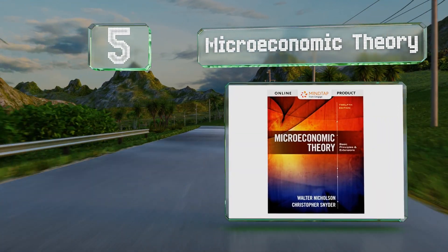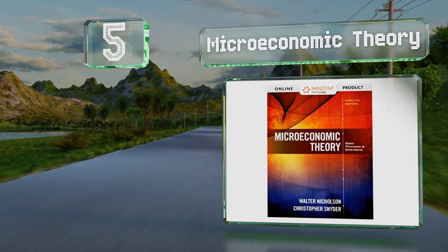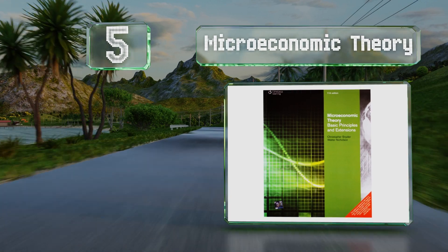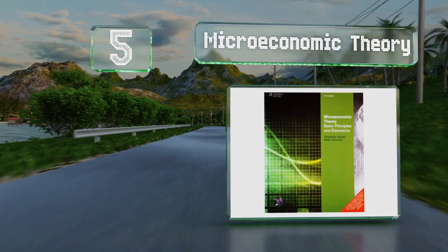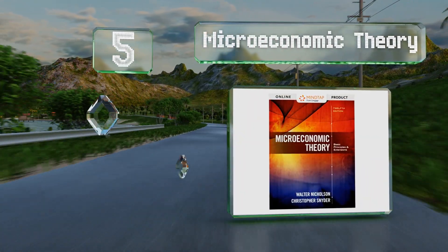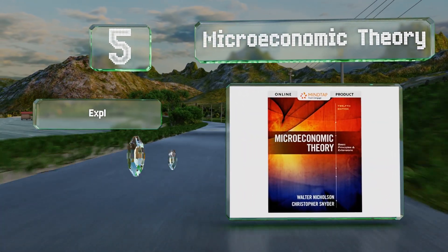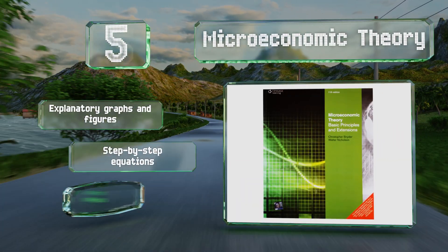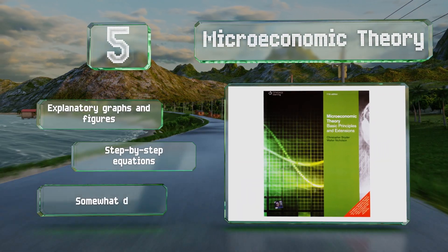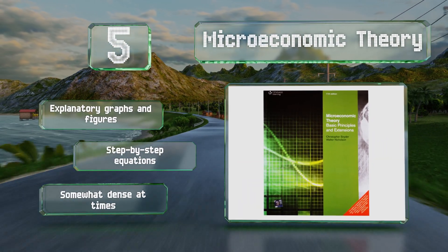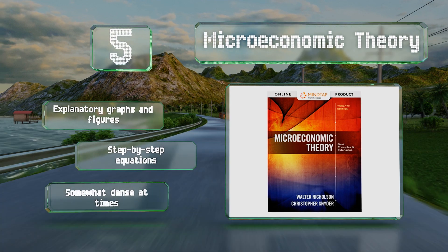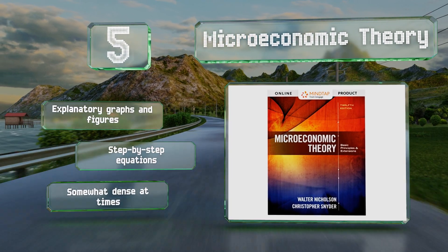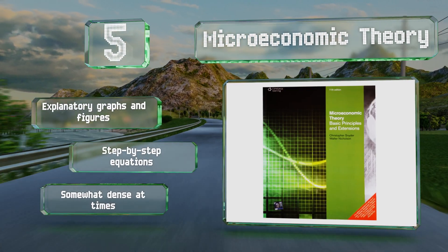Halfway up our list at number five, ideal for graduate-level students, Microeconomic Theory examines advanced concepts and recent developments with clear, occasionally humorous writing. It touches on everything from theoretical models and mathematics to game theory and profit maximization. It includes explanatory graphs and figures and step-by-step equations, but it can be somewhat dense at times.